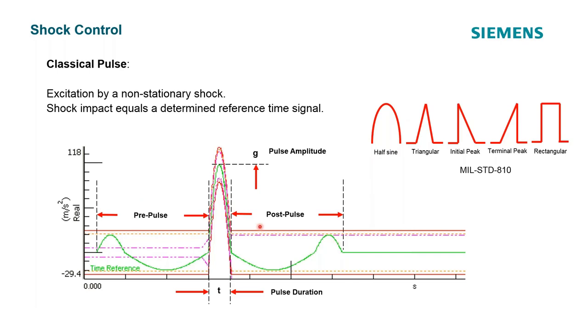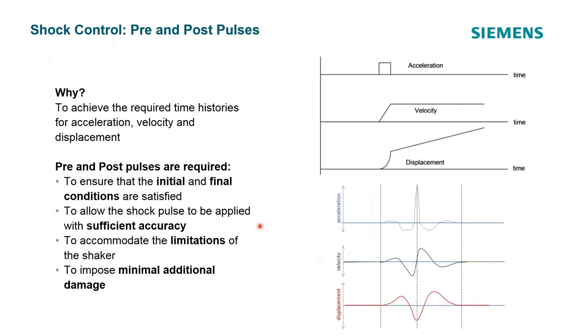We also have this pre and post-pulse. What is the function of this pre and post-pulse? These serve to ensure that the shaker displacement and velocity begin and terminate at zero. If we just had the main pulse, for example a rectangular pulse, and we integrated that into velocity and then also integrated into displacement, you can see that the velocity and displacement would not end at zero.